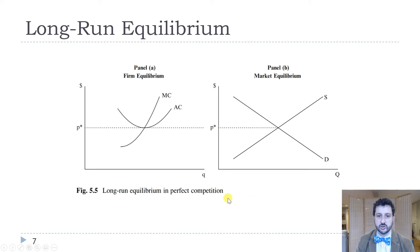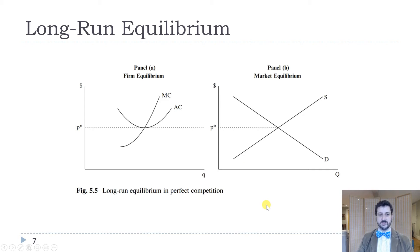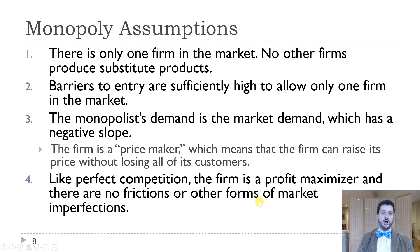That long-run equilibrium really depends on entry and exit. If firms are earning positive economic profit in the short run, because there's free entry and exit, firms will enter until the price goes down to the point where it equals minimum average cost. Minimum average cost always crosses the marginal cost curve right there, and so economic profits will be zero in the long run.